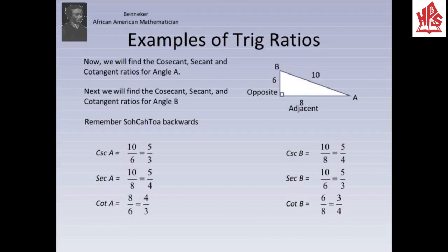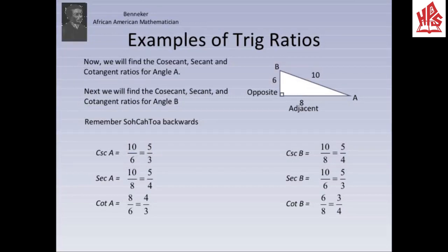Now take another example. We have triangle ABC where AB is the hypotenuse of 10 units, and the other two sides BC and AC are 6 and 8 units respectively. We will find the cosecant, secant, and cotangent ratios for angle A. For angle A, BC is the opposite side and AC is the adjacent side. Cosecant of angle A is hypotenuse over opposite, that is 10 over 6, which simplifies to 5 over 3. Secant of angle A is hypotenuse over adjacent, that is 10 over 8, which simplifies to 5 over 4. Cotangent of angle A is adjacent over opposite, that is 8 over 6, which simplifies to 4 over 3.